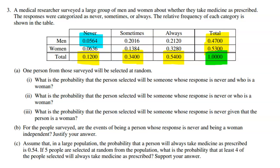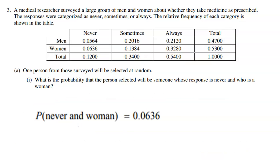They ask us three questions — part A, part B, part C — and part A has three parts itself. Part A(i) says: a person from this survey will be selected at random. What is the probability that the person selected will be someone whose response is never and is a woman? So never and woman — we just cross those two things in the table. That would be 0.0636: never and woman. Of all the people in the survey, 6.36% were both women who never take their medication as prescribed.